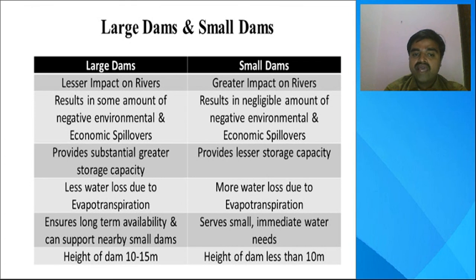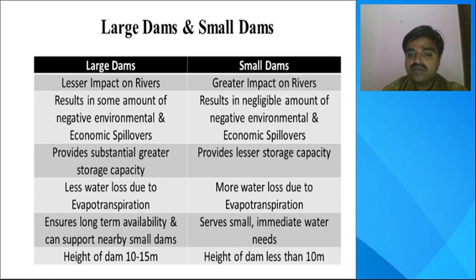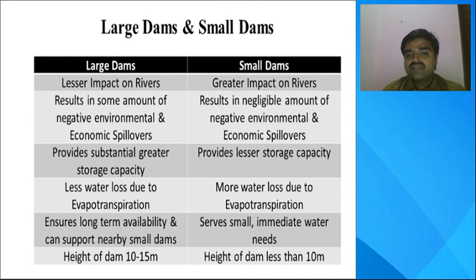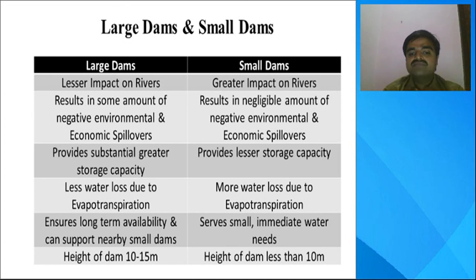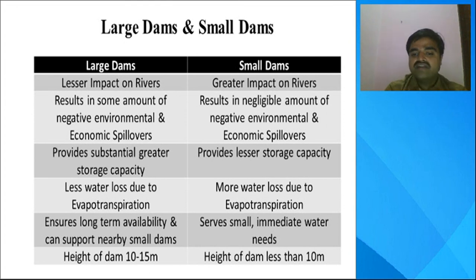Large dams have less water loss due to evapotranspiration, while small dams have more water loss. Large dams ensure long-term water availability and can support nearby small dams, whereas small dams serve small and immediate water needs. Large dams can have a height of 10 to 15 meters, while small dams are restricted to less than 10 meters.